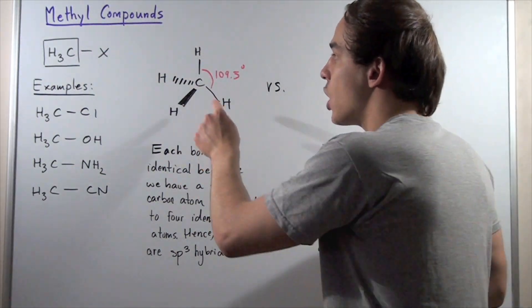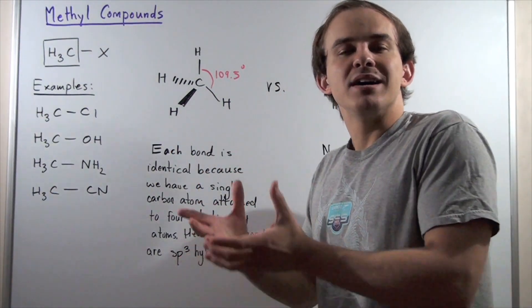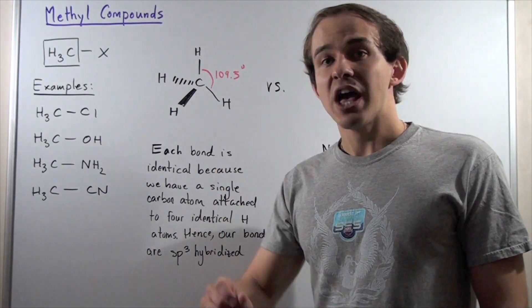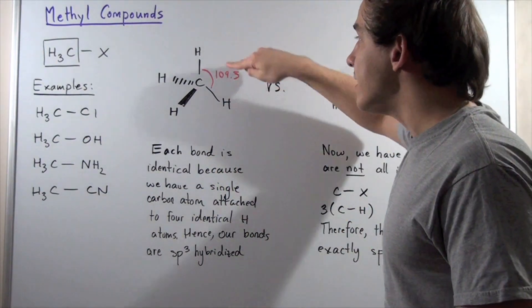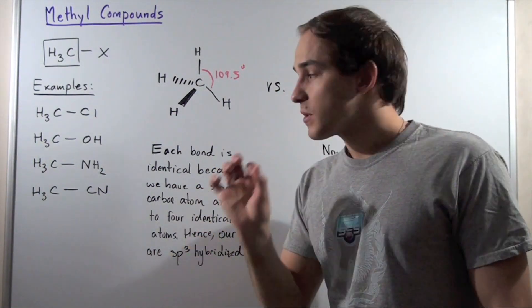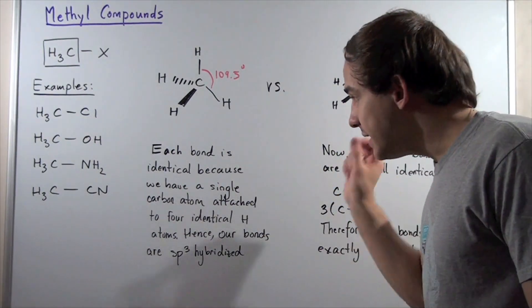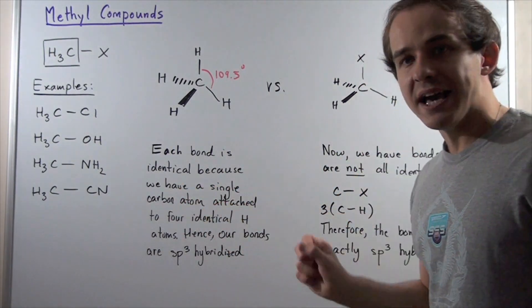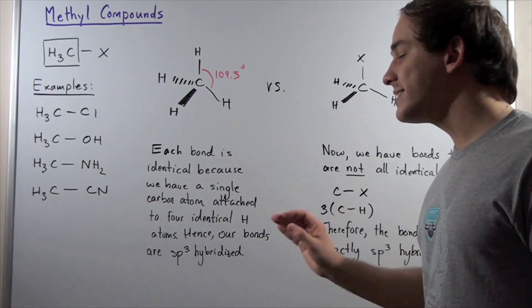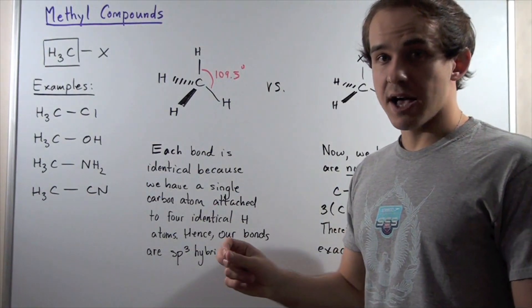All the CH bonds will be exactly the same as each other. All the CH bonds will be SP3 hybridized, and the angles between any two bonds will be 109.5 degrees. Each bond is identical because we have a single carbon atom attached to four identical H atoms. Hence, our bonds are all SP3 hybridized.